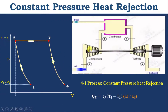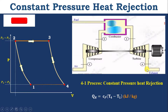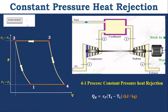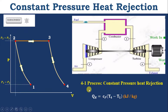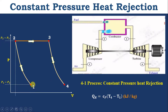Next, the constant pressure heat rejection process. The turbine exhaust temperature must always be greater than the inlet temperature of the compressor, so we need to find the amount of heat rejected. The atmosphere maintains constant pressure, which is why we use constant pressure heat rejection. For process 4–1: QR = Cp(T4 − T1) kJ/kg.